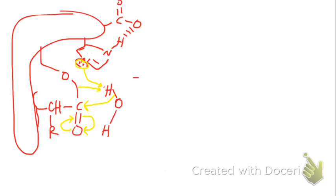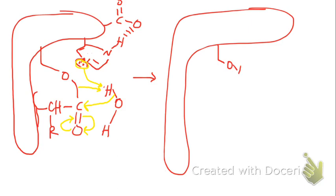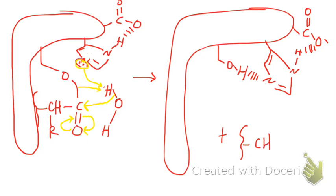When that happens you get serine, histidine, and aspartate back, right? Because for an enzyme to be a catalyst you need to regenerate it, plus you now have a free C terminus from the protein or peptide that you did this to.